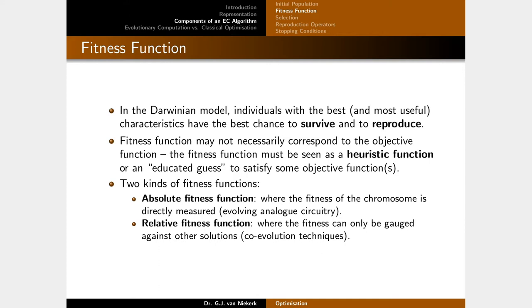In the Darwinian model, individuals with the best and most useful characteristics have the best chance to survive and reproduce. The fitness function — which may not correlate directly with the objective function — acts as a heuristic to guide solutions in the right direction. An absolute fitness function assigns a numerical value to each solution, enabling comparison in maximization or minimization problems. A relative fitness function doesn't assign a number but can at least rank one solution as better than another — sometimes that's the only option available.